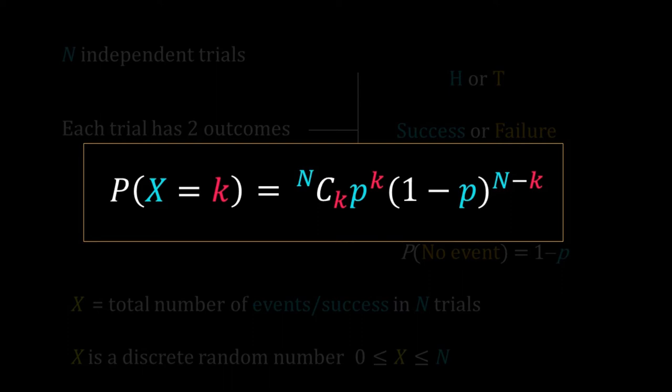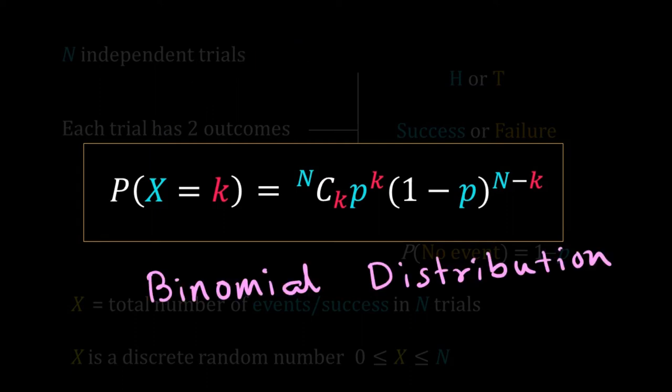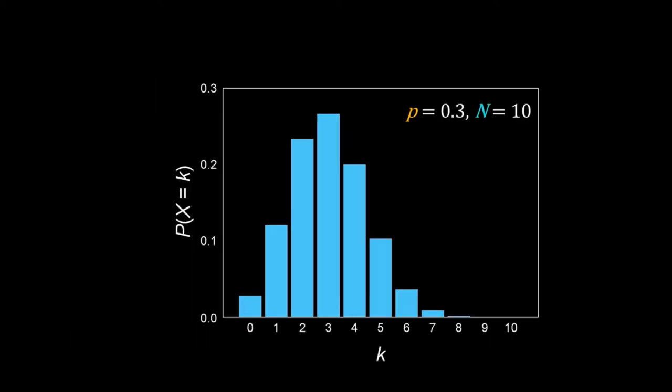Here X is a discrete random variable — it can be 0, 1, 2, and so on, but never 1.3 or 20.88. This equation gives the probability that the random variable takes a specific discrete value. This probability is called the probability mass function, or PMF. The probability distribution of X is called the binomial distribution. Here is the PMF of the binomial distribution for n equal to 10 and p equal to 0.3.